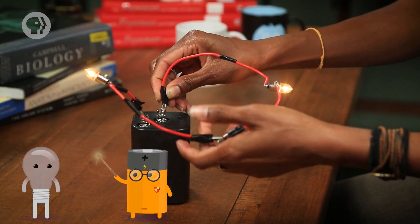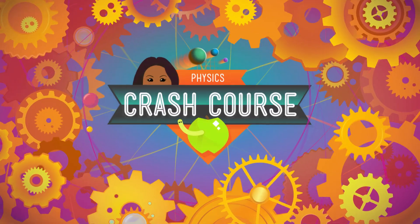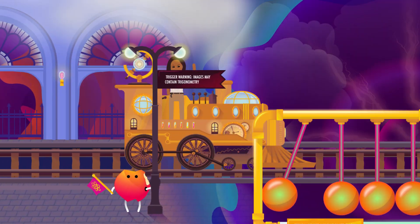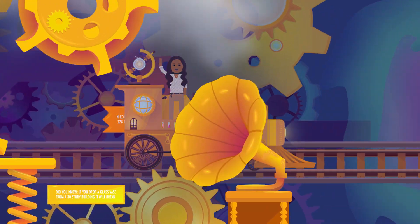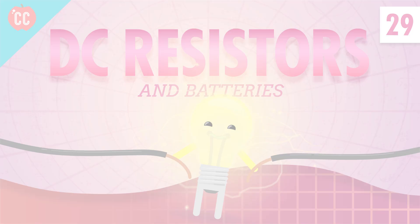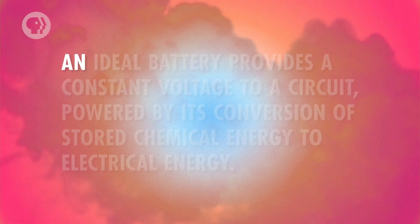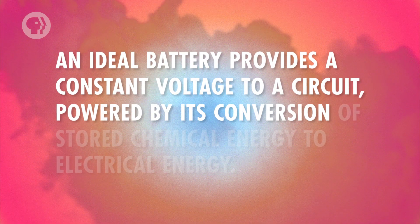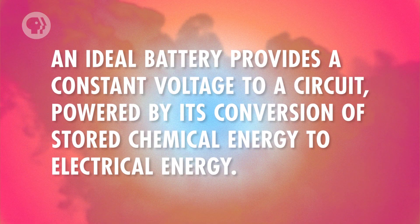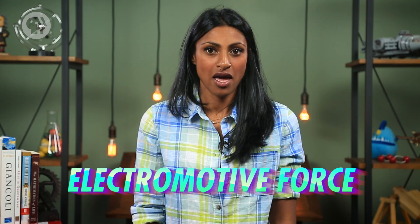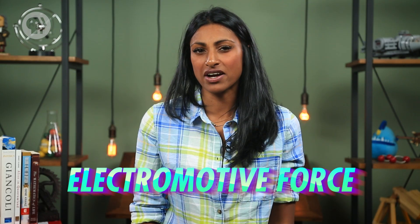And hopefully, once we're through, these bulbs here won't be the only ones lighting up. Let's start our anatomy of a circuit lesson with our source of energy — the battery. An ideal battery provides a constant voltage to a circuit, powered by its conversion of stored chemical energy to electrical energy. Scientists say that the battery is a source of electromotive force, because it gets charge to move, but it's not really providing a force, but rather a difference in electrical potential. So we shorten this to say that the ideal voltage supplied by the battery is its EMF. Ideally, the battery uses all of its voltage to power the device's inner circuit. But like most things in real life, batteries aren't perfect.